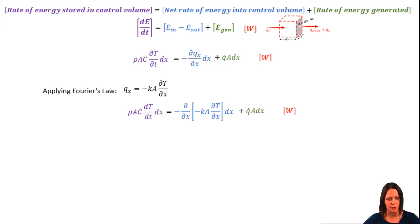We can apply Fourier's law and put that qx in terms of k, a, and the temperature gradient. Assuming that k and a do not change with location, we take those constants out of the derivative and write the temperature gradient as a second derivative with respect to x.